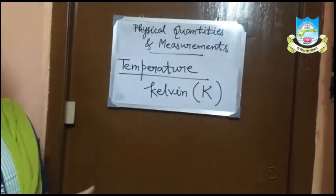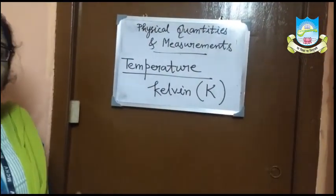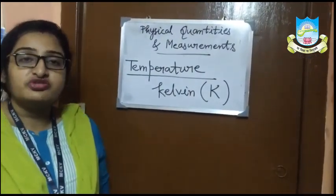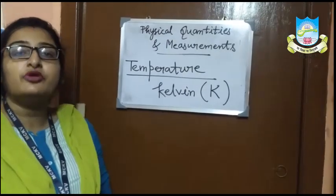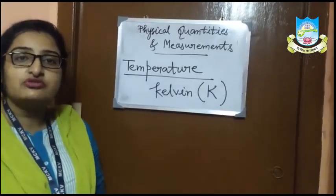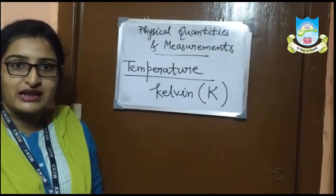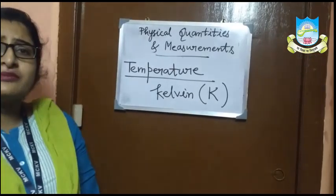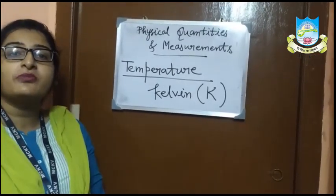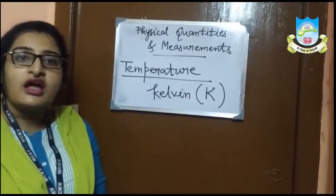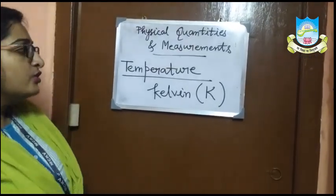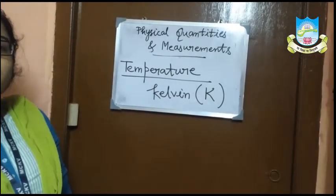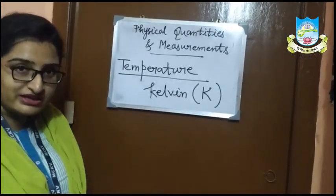Mercury is used as the thermometric liquid in a clinical thermometer. For measuring the temperature of any object in a laboratory, we use a laboratory thermometer, and generally alcohol is used as the thermometric liquid. A laboratory thermometer can measure generally from minus 10 degree Celsius to 110 degree Celsius. Nowadays we use digital thermometers at home, but in a digital thermometer we don't use any thermometric liquid.